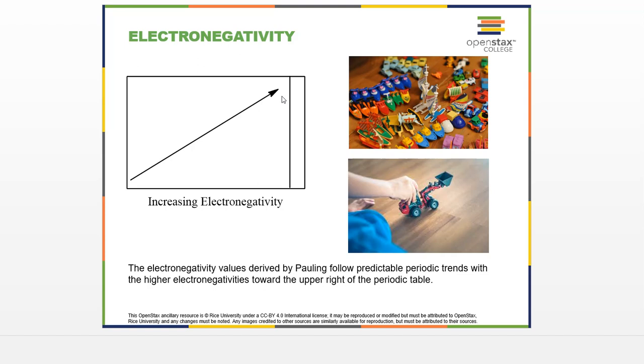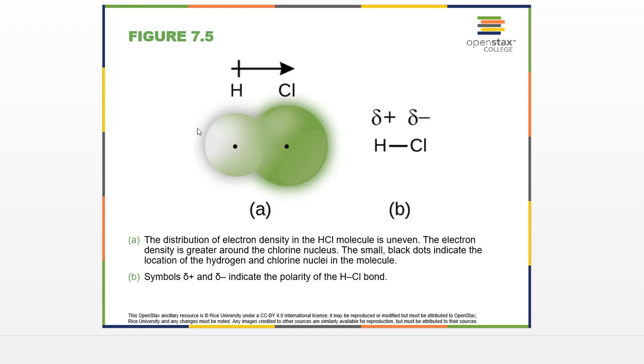Chlorine is more electronegative than hydrogen. It's closer to fluorine, so therefore it's more electronegative. This is not an even sharing situation. The electron density is going to spend more time around chlorine and less time around hydrogen.